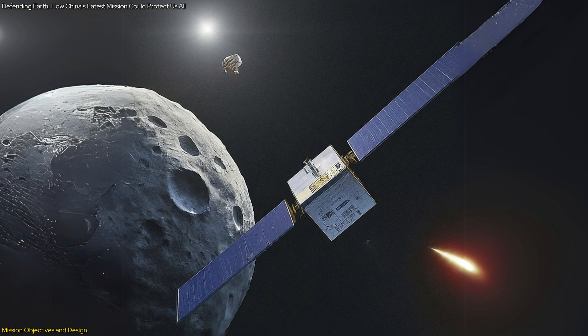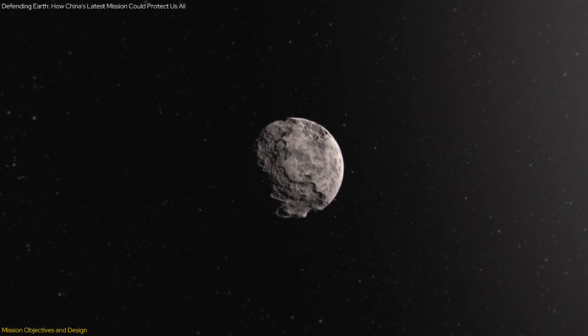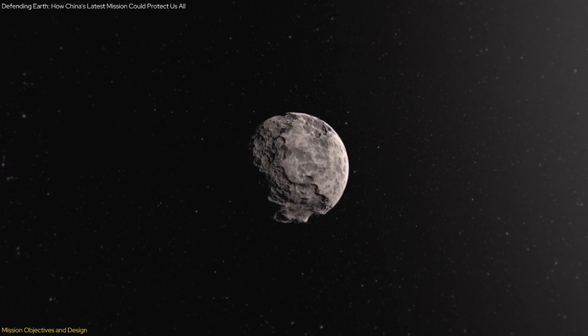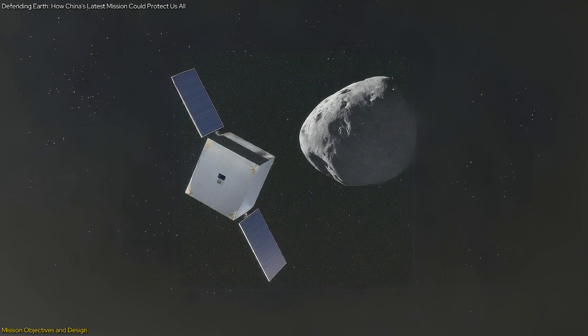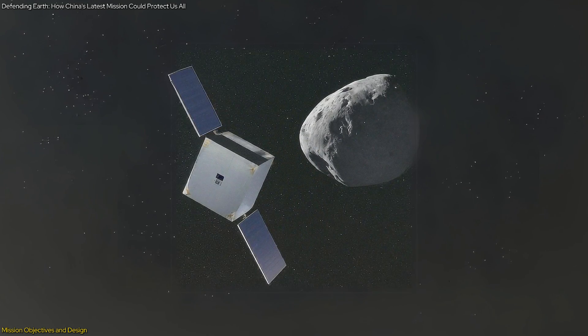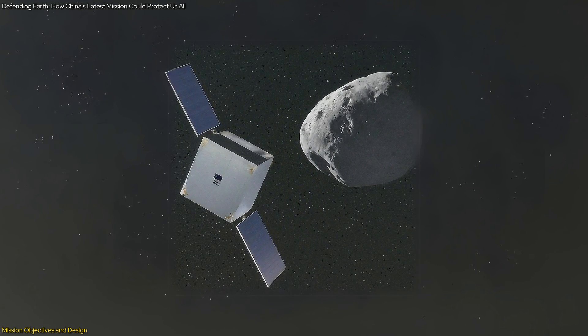Initially, the observer spacecraft will reach the asteroid first and spend several months studying its size, shape, composition, and orbit. This phase will provide critical data to inform the impact strategy and ensure accurate targeting.